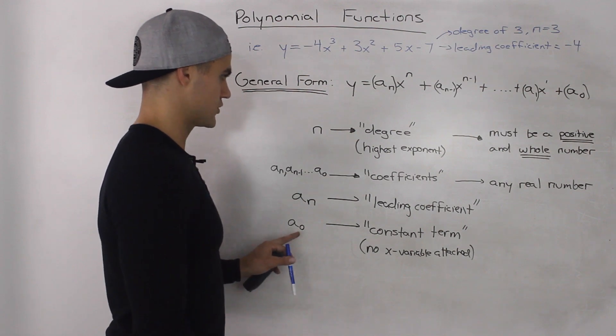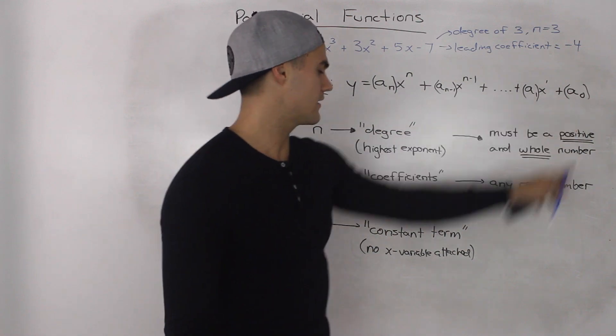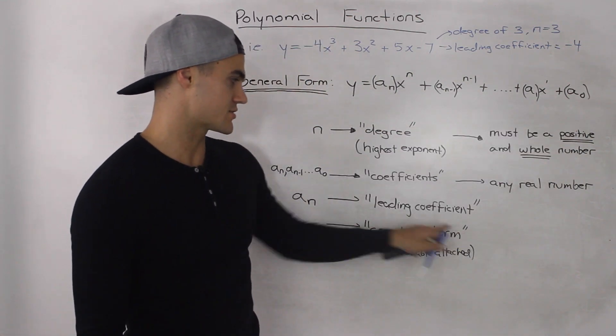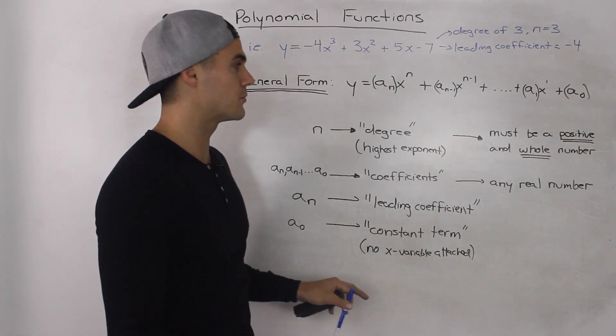And the other coefficient that's fairly important usually is the a_0 one, this one here at the end. And that's just called the constant term. And it's the coefficient that has no x variable attached to it.